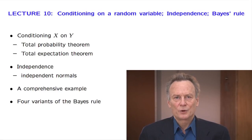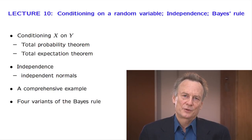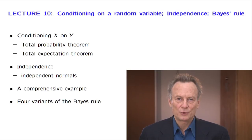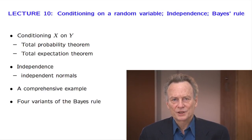In this lecture, we complete our discussion of multiple continuous random variables. In the first half, we talk about the conditional distribution of one random variable given the value of another. We will see that the mechanics are essentially the same as in the discrete case.